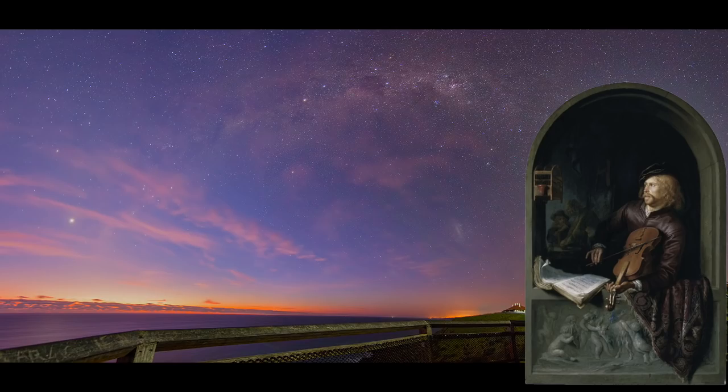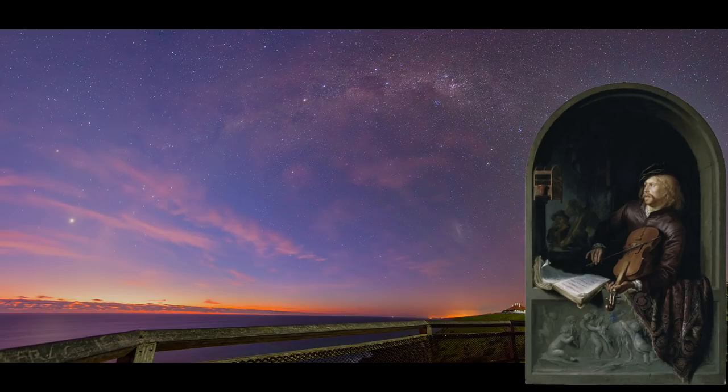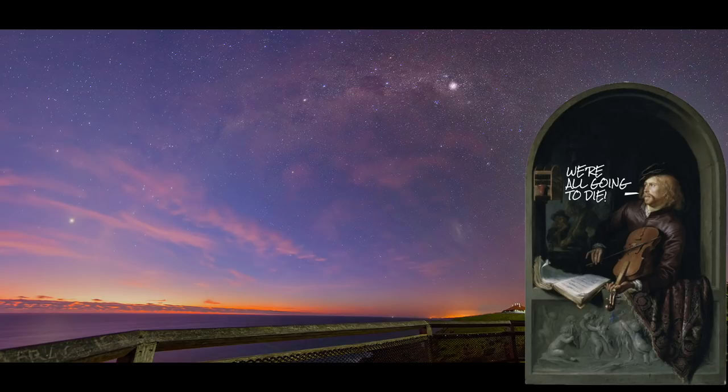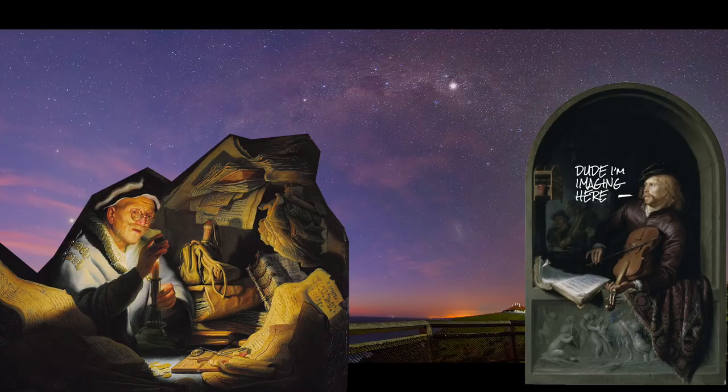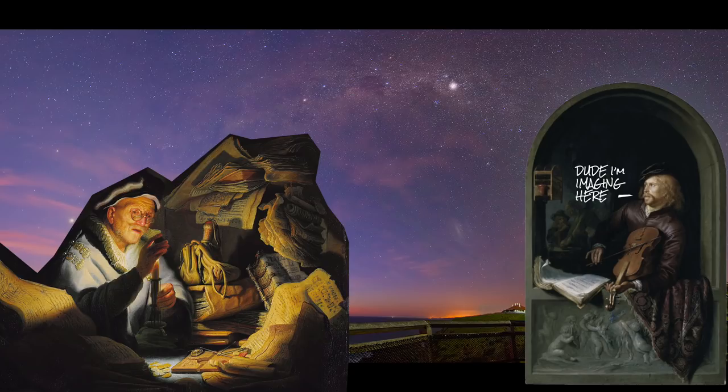But from the 1600s, Eta Carinae, the star in the big nebula started to get brighter and dimmer and brighter and dimmer. Then in 1820, for two decades, it suddenly got brighter and brighter until it outshone even Canopus and became the second brightest star in the sky. This was called the Great Eruption, and probably would have been amazing to watch over time.